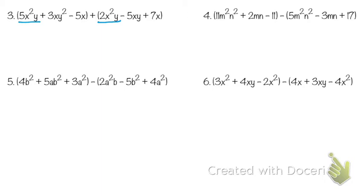Now we're still focusing on x, and we notice we have a tie with x to the first — x to the first, x to the first, x to the first. What breaks the tie? We go to the second variable and say, what has the highest power on the second variable? They're all even with x, so which one has the highest power for y? The 3xy squared, so that goes second. Then negative 5xy, because that has the next highest power of y.